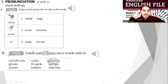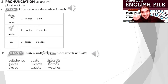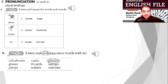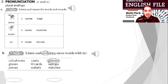Now listen and circle two or more words with /ɪz/. For example, 'glass' — 'glasses' — /ɪz/, right? Listen: cell phones, coats, glasses, gloves, ID cards, laptops, pieces, wallets, watches. Check with your partner. The answers: pieces, watches. Great, you did good!